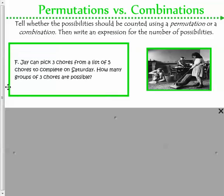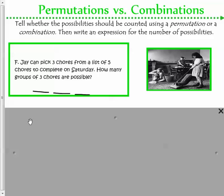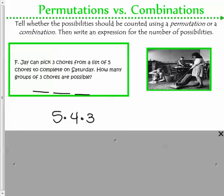Okay, so real quick, Jay can pick three chores from a list of five. So he can pick one, two, three chores from a list of five. So how many groups of chores are possible? He can pick five, then four, then three. So five times four is 20, times three is 60. There are 60 possible ways that he could do this. Okay, and that's all I've got for you, and I'll see you next time.